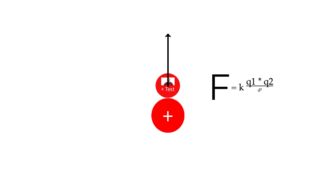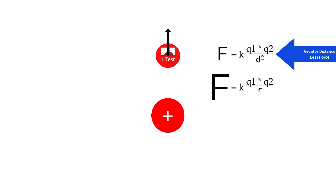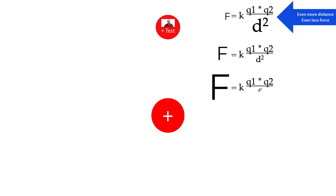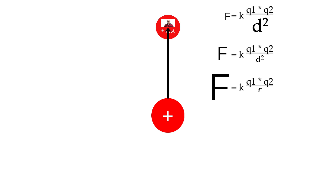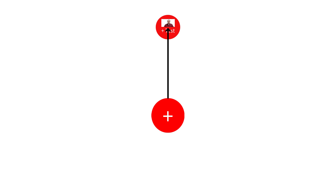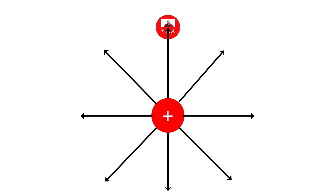Now the further I get from this charge, if I test another point, I'm going to feel less force. And if I test a point even further away, I feel even less force. But notice with the vectors that I've drawn, I have essentially drawn a straight line away from the positive test charge. This is an electric field line. I can do this anywhere around that positive source charge, and I end up with an electric field diagram for this charge.